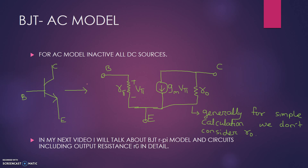Now let us talk about the Rpi model, that is the transconductance model of the BJT. Any BJT can be converted to an AC model — the transconductance model — as shown in the figure. The B, C, and E terminals are mapped to the B, C, E terminals in the AC model, and this is valid for all circuits. Here, Rpi is the resistance between the base and emitter.